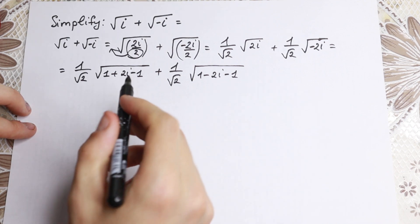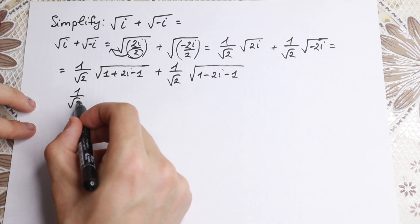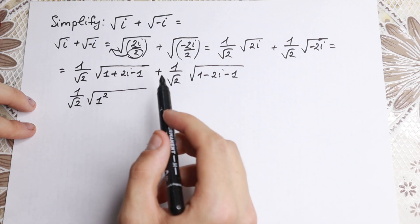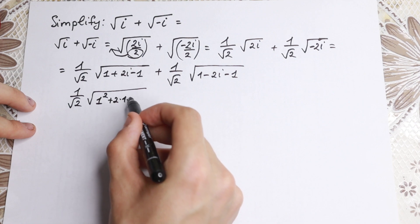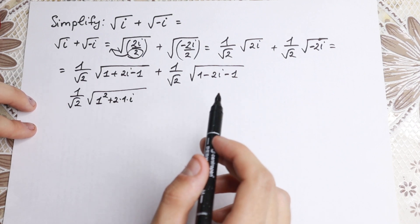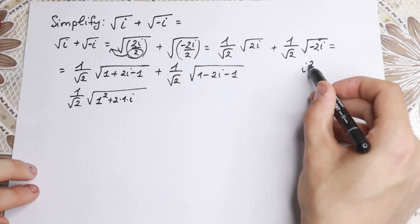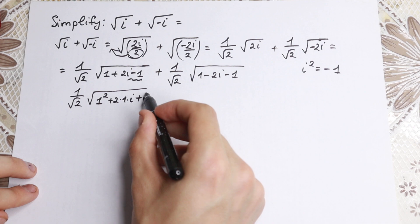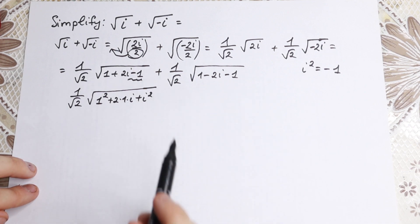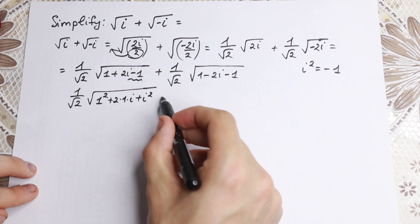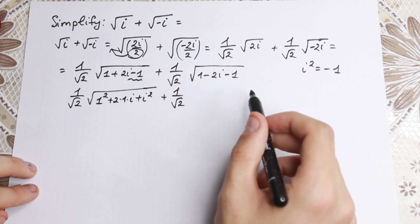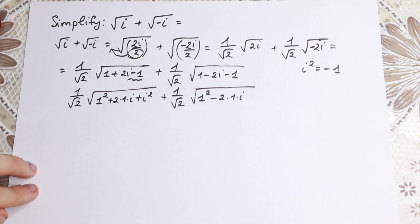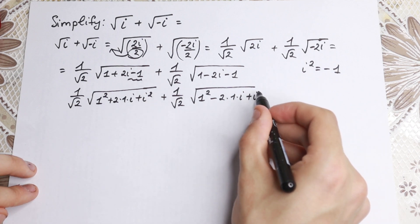Let's see if completing perfect squares is possible. Inside the square root we write 1 squared, then 2i can be written as 2 times 1 times i. The key point here: we know that i squared equals minus 1, so we can replace that minus 1 with i squared. This gives us plus i squared. We do the same for the second element: 1 squared minus 2 times 1 times i, plus i squared.